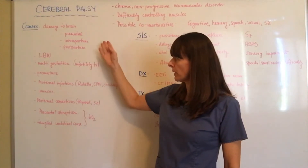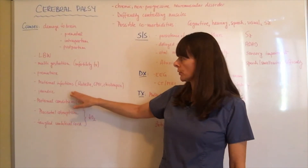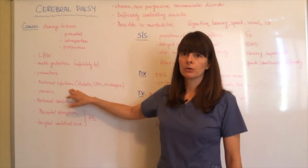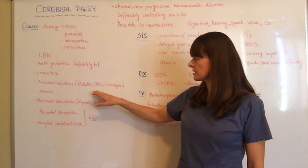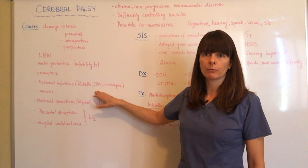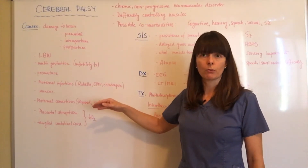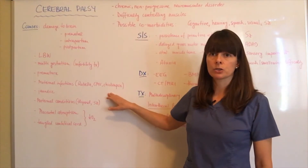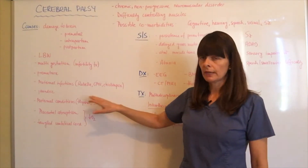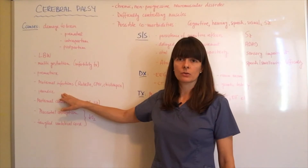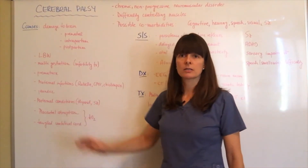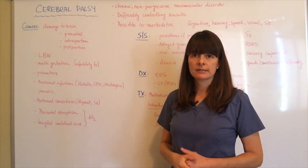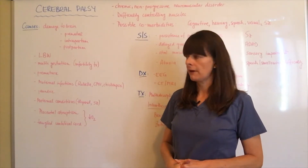In the prenatal period, maternal infections can also lead to cerebral palsy. Those would include infections we want to keep away from pregnant women: rubella, German measles, cytomegalovirus, as well as chicken pox. Neonatal jaundice is also linked to cerebral palsy because of the buildup of bilirubin in the system and its effect on the brain and brain development.